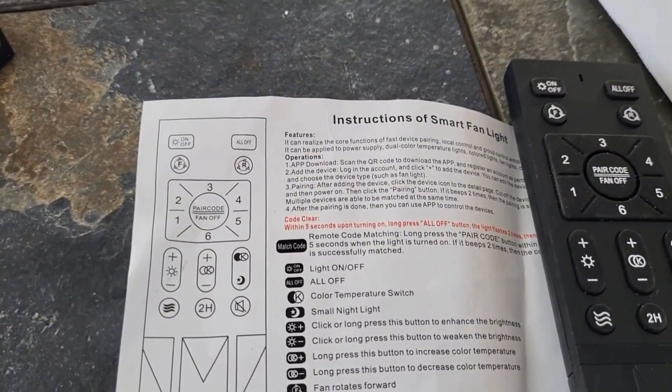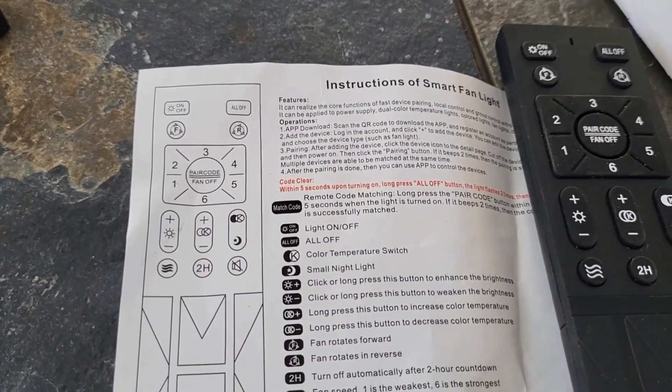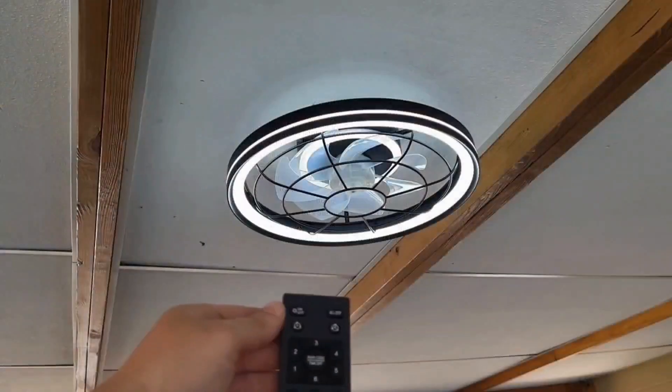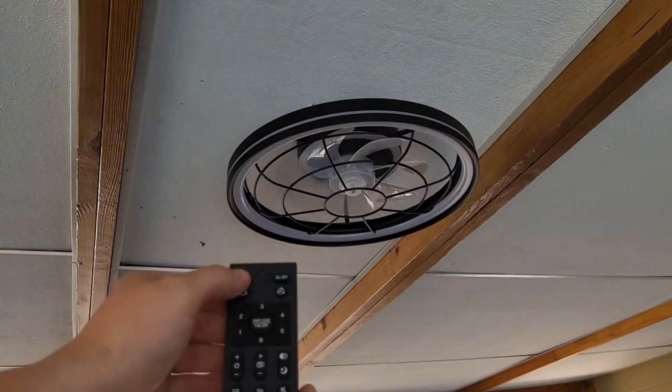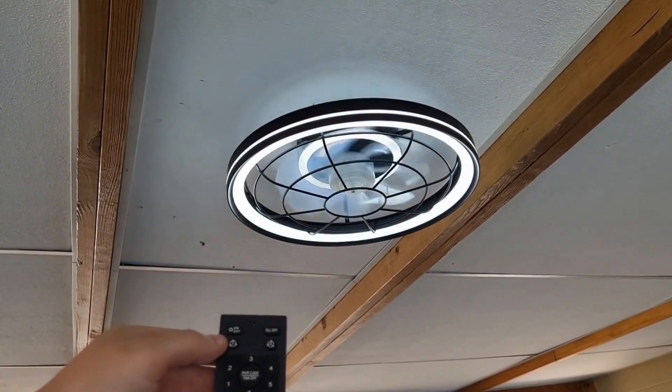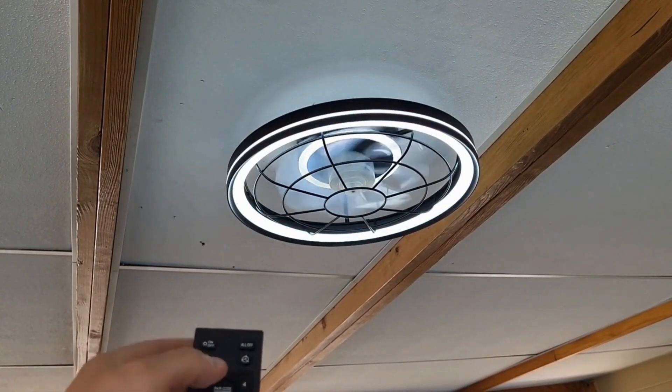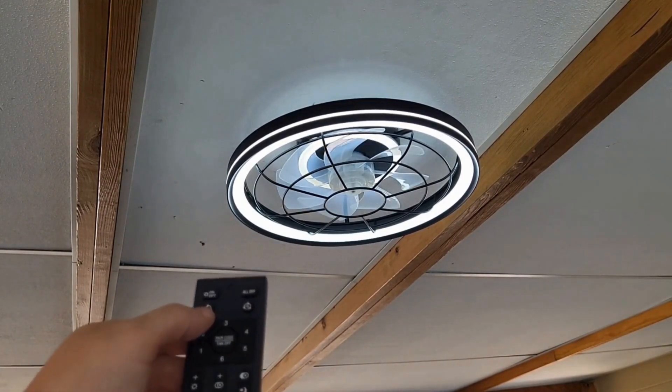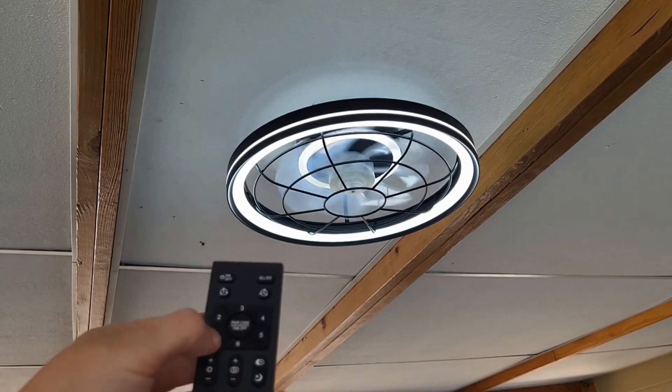Now right here is the controller and all the options that are on the controller itself. It's very easy and straightforward. Here we're going to turn it all off. We're going to turn on the fan, and the fan does have a reverse option and a forward option. I love the fact that this fan and light can be controlled by a remote.